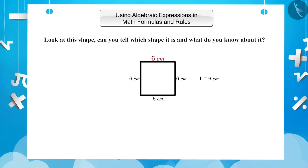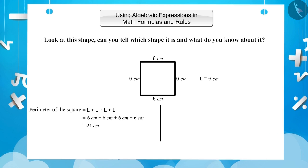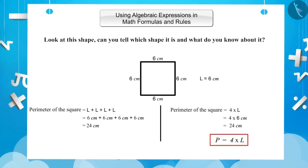The perimeter of a square is equal to the sum of the lengths of all its sides. So the perimeter of this square will be L plus L plus L plus L, which equals 6 cm plus 6 cm plus 6 cm plus 6 cm, which equals 24 cm. We can also show this differently by multiplying the square side by 4. That is, the perimeter equals 4 multiplied by L, which equals 4 multiplied by 6 cm, which equals 24 cm. Generally, we show the perimeter of a square with P. Hence, P is equal to 4 multiplied by L. With this formula, you can find the perimeter of any square.